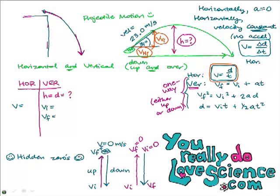There are other hidden zeros too. When a problem says the object is 'falling from rest' or 'dropped from rest,' those words 'from rest' mean the initial velocity vertically is zero. That's another hidden zero.